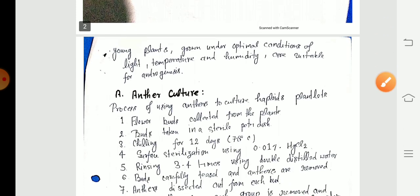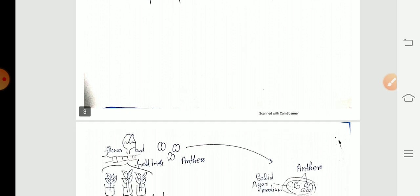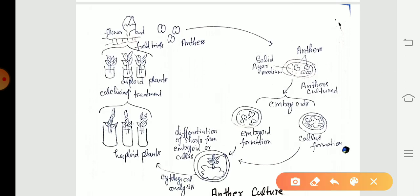I will discuss anther culture. In anther culture, we will take the flower buds. That flower bud is sterilized with the help of mercuric chloride and double distilled water. The anther is removed from this flower and placed on solid agar medium. After that, the anther develops into embryoids. After the development of embryos, there is the formation of shoots.